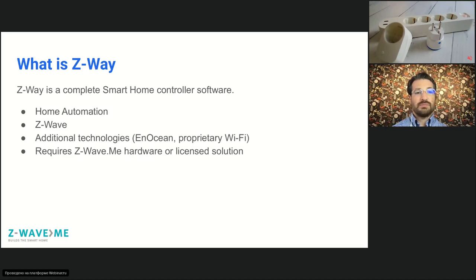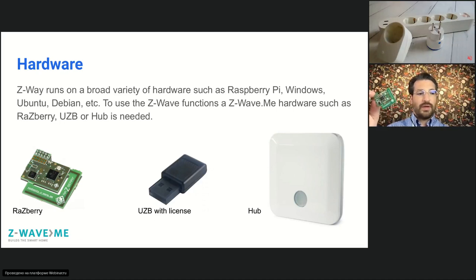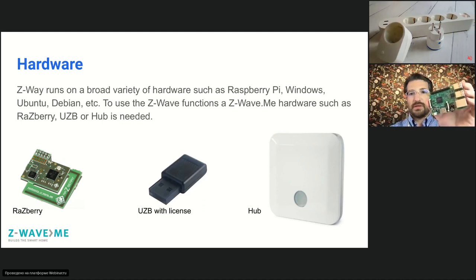Z-Way requires some Z-Wave Me hardware or a licensed solution. A licensed solution means hardware manufactured in agreement with us that can run Z-Way internally. On the hardware side you always need something to control Z-Wave devices, and Z-Wave Me provides several options. The most popular option is the Raspberry Pi with a Z-Way Shield that connects on top.